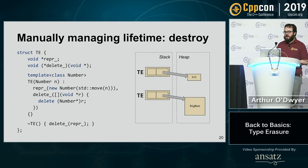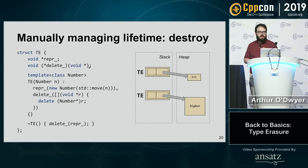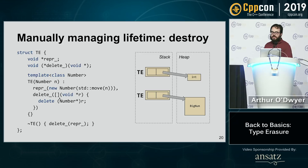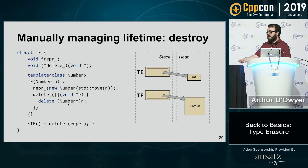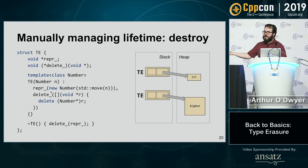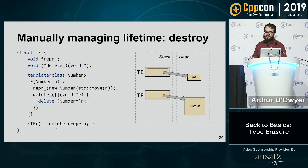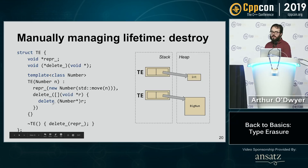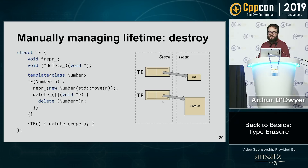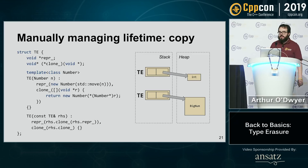Here's how we type-erase the affordance of destructibility. I add a function pointer that takes the representation and, as a side effect, deletes it. In the constructor template, I initialize this with a lambda that casts the void star back to the number type and calls delete. I also call new to heap-allocate the object. Then in my destructor, I manually call that type-erased delete function, passing in the representation. Only that lambda's body understands what it means to delete the stored object.